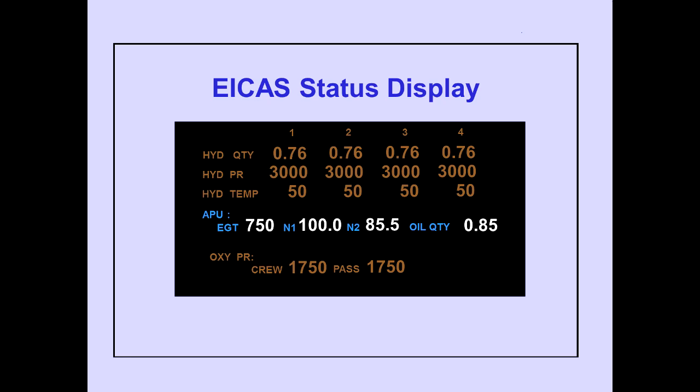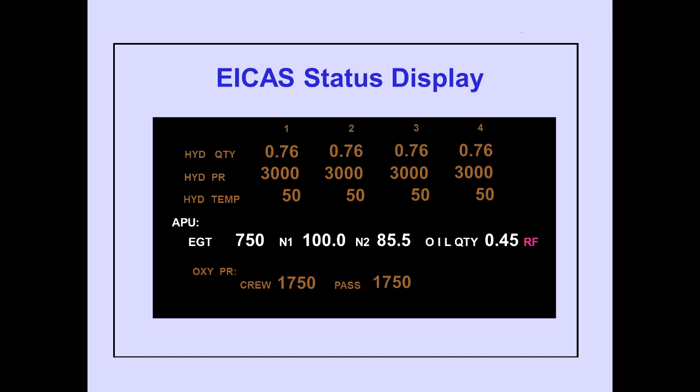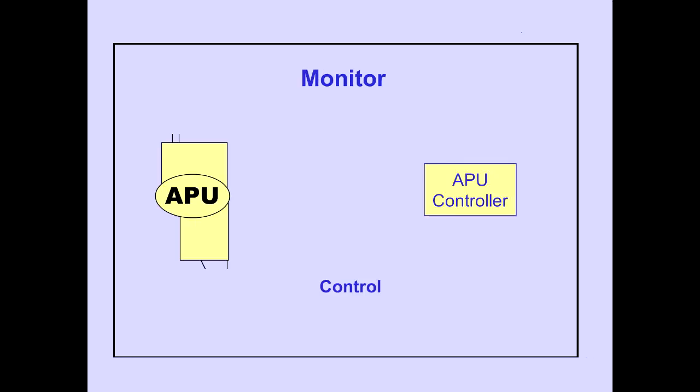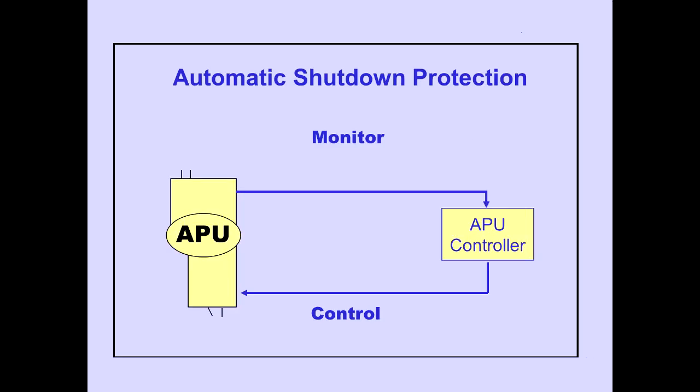APU indications for EGT, N1 and N2, oil quantity and battery condition are located on the EICAS status display. Magenta RF or LO is displayed next to the oil quantity indication when quantity is below the prescribed level. RF indicates oil quantity is below the refill level. LO replaces RF when a low oil level condition exists. The APU controller allows unattended operation of the APU by continuously monitoring system performance and controlling operating parameters within program limits. Automatic shutdown protection is provided by the APU controller through fault detection logic.